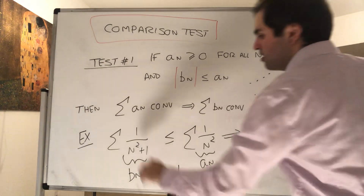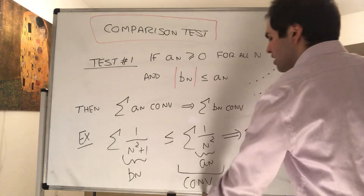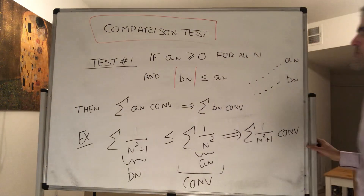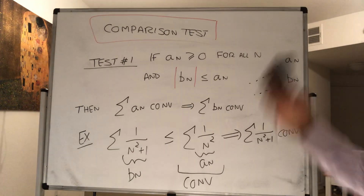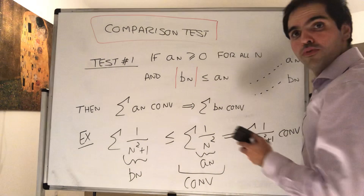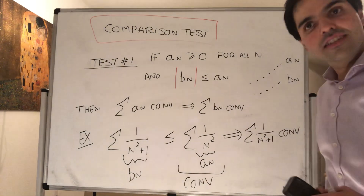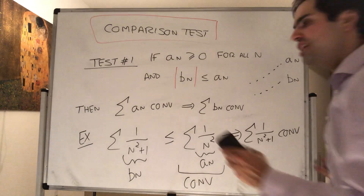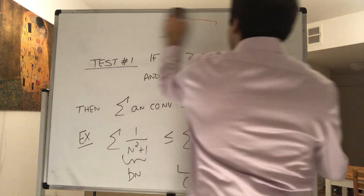So again, if the bigger series converges, the smaller one must converge. And now let's prove this, because it's a nice application of the Cauchy criterion.